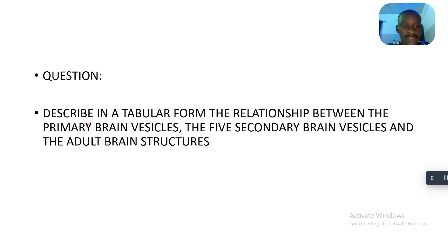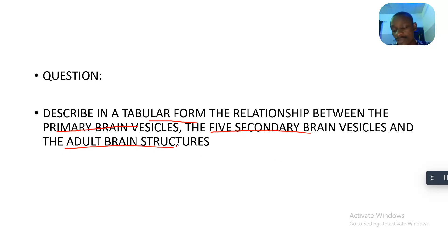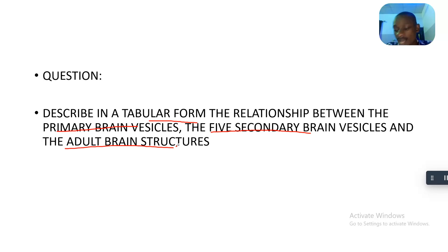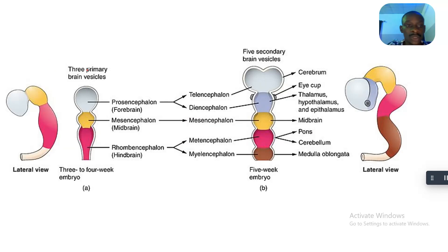The full question is describing, in tabular form, the relationship between the primary brain vesicles, the five brain vesicles, and the adult brain structures. So just a brief summary: the primary brain vesicles develop into the secondary brain vesicles, and the secondary brain vesicles develop into the adult brain structures. This image summarizes everything I'll be talking about in these handouts.